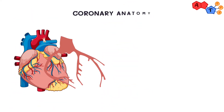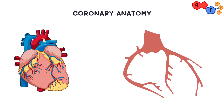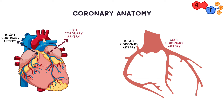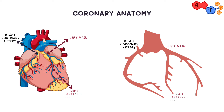Now for coronary anatomy, there are two coronary arteries — a left and a right one. The left coronary starts as the left main, and then that left main divides to provide the LAD, or left anterior descending artery, and the left circumflex. The right coronary artery arises from the right coronary sinus to supply the heart on the right side.